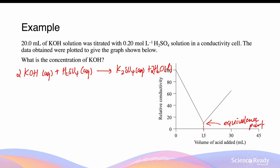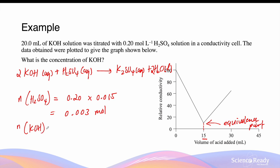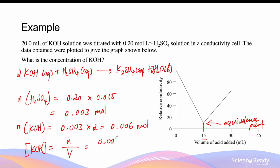The equivalence point occurs when 15 millilitres of sulfuric acid is added. The number of moles of sulfuric acid equals concentration multiplied by volume in litres: 0.2 mol/L × 0.015 L = 0.003 moles. Considering the 2:1 molar ratio, the moles of potassium hydroxide = 0.003 × 2 = 0.006 moles. The concentration of potassium hydroxide = 0.006 moles ÷ 0.02 L = 0.30 mol/L.